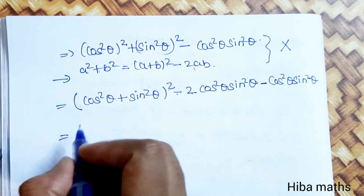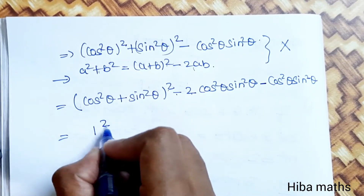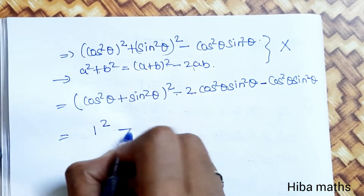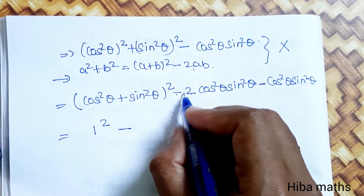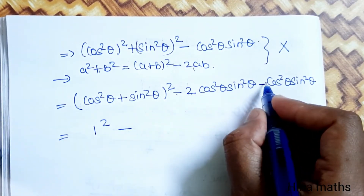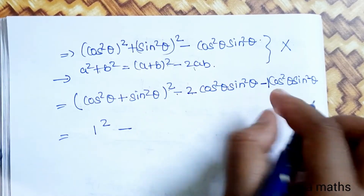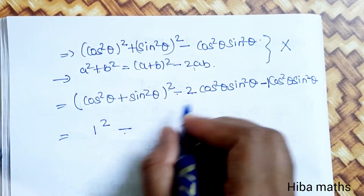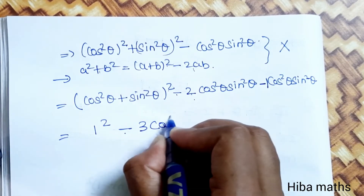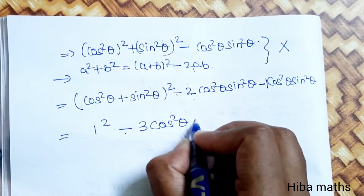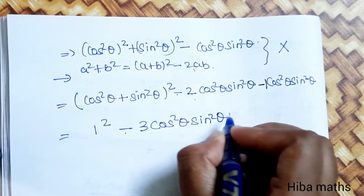Since cos²θ + sin²θ = 1, we have 1² - 2cos²θ sin²θ - cos²θ sin²θ. Combining terms: 1 - 2cos²θ sin²θ - cos²θ sin²θ = 1 - 3cos²θ sin²θ. This can be written as 1 - 3(cos θ sin θ)².